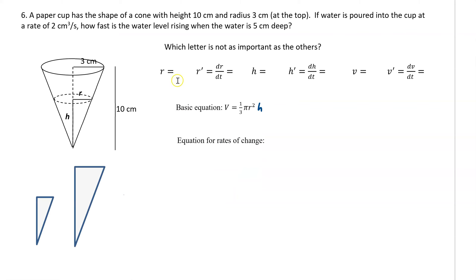A paper cup has the shape of a cone with a height of 10 centimeters and a radius of 3 centimeters. If water is poured into the cup at a rate of 2 cubic centimeters per second, how fast is the water level rising when the water is 5 centimeters deep? This whole thing is about the water changing. The cup dimensions — we will use them, but they are not numbers you want to plug in for your radius, height, and volume. It's what's changing.